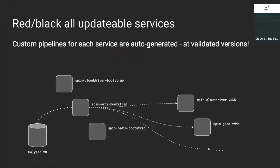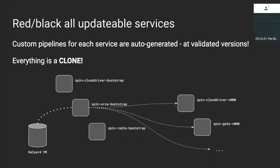It creates custom pipelines for each service. The versions of each subcomponent installed match those validated versions — Cloud Driver and Gate working together at a given Spinnaker version. It's important to note: in Halyard, when you make a change to the way Spinnaker is configured — maybe you want to change a port, change a network policy — and you deploy again, everything is left intact that you've changed except for things like which container image you're running. The idea is you deploy Spinnaker, make any edits you need for your environment, and those are kept in place forever.